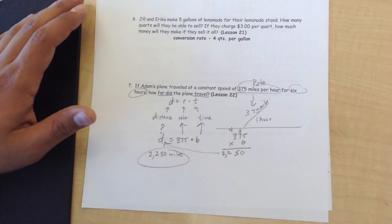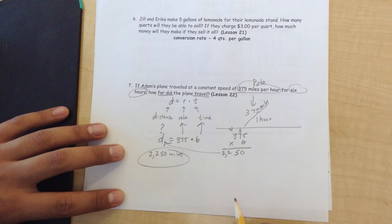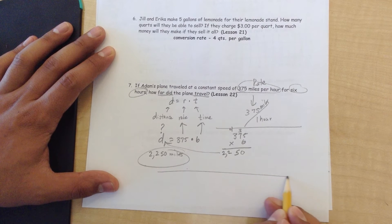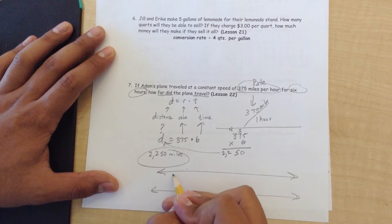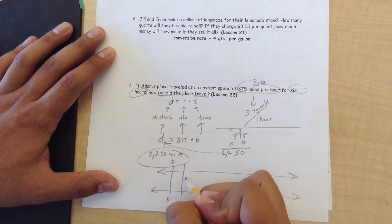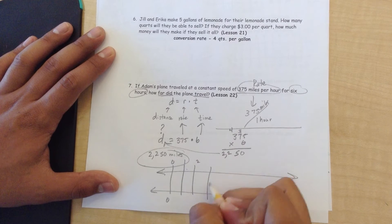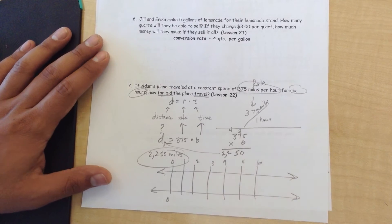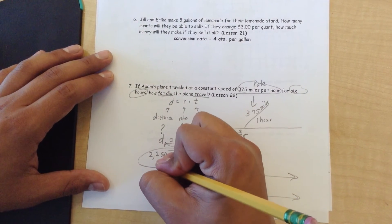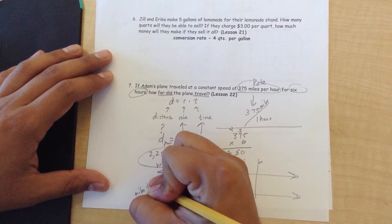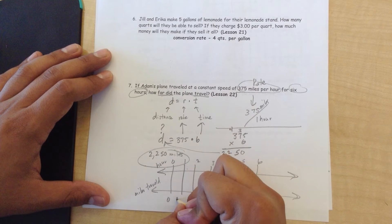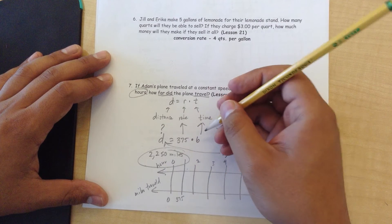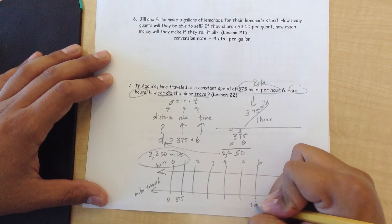If I was going to represent that in a model, I would draw a double number line: 0, 1, 2, 3, 4, 5, 6. For every hour, I'm going to put the top in miles traveled. That means for every one hour, I traveled 375 miles. And after 6 hours, I traveled 2,250 miles.